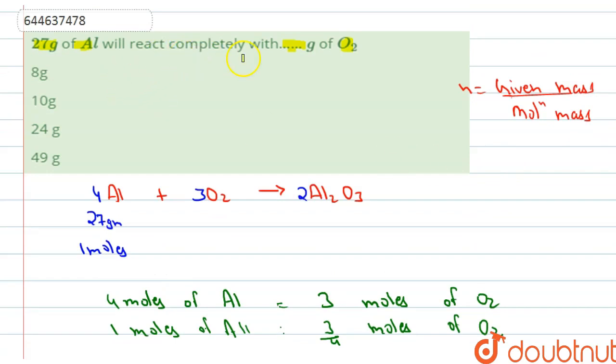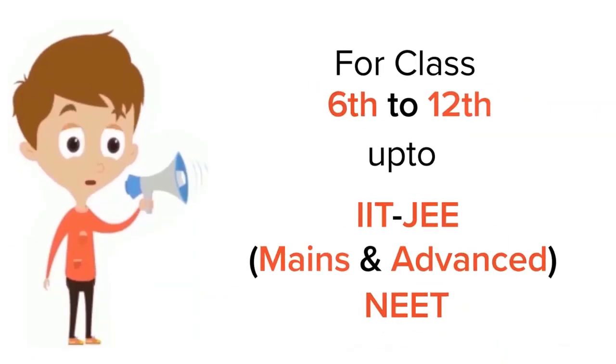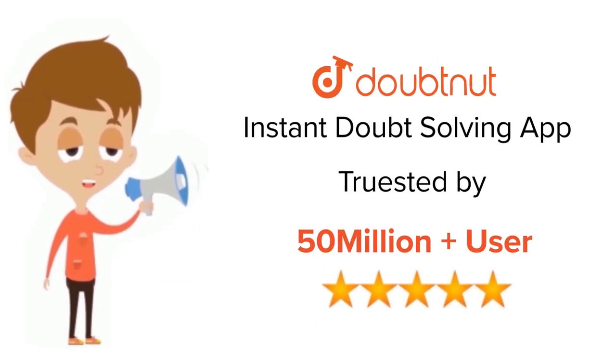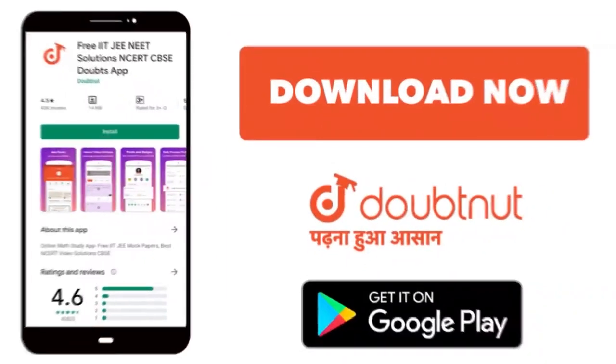24 grams is needed to react completely with 27 grams of aluminum, so the answer will be option C. Thank you for watching, best of luck and bye bye. For class 6 to 12, IIT-JEE and NEET level, trusted by more than 5 crore students, download Doubtnut app today.